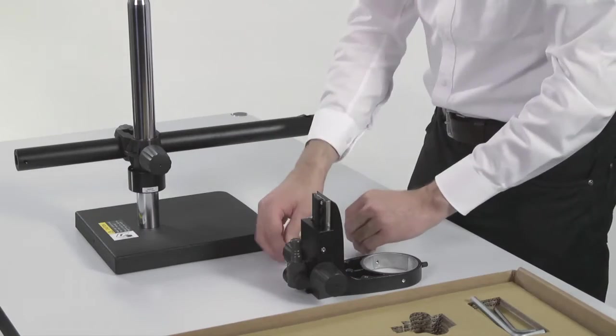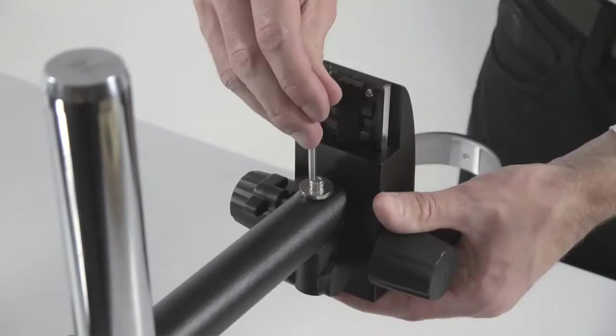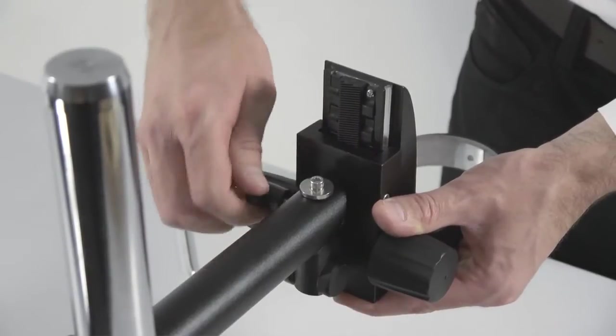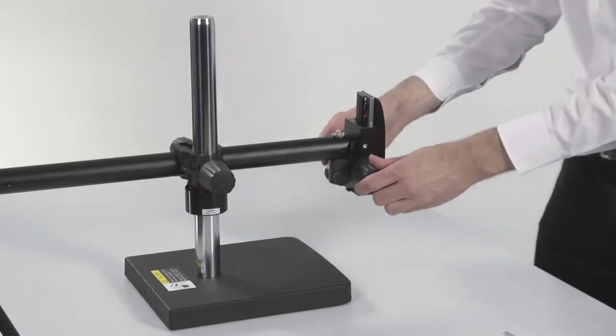Now we'll install the microscope carrier. Use the mounting screw and the safety washer to ensure that the microscope carrier will not fall off the horizontal arm.